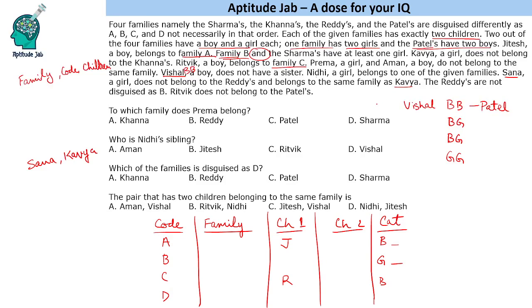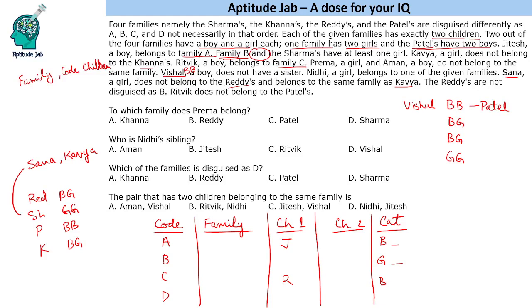Now let us find out which family Sana and Kavya can be in. We have four families: Redis, Sharma, Patel, and Kanna. Patel is both boys — that is given. Sana does not belong to Redis, so Redis will be a boy-girl family. Kavya does not belong to Kanna, so Kanna will also be a boy-girl family. That means Sana and Kavya both belong to the girl-girl family, which is Sharma's.